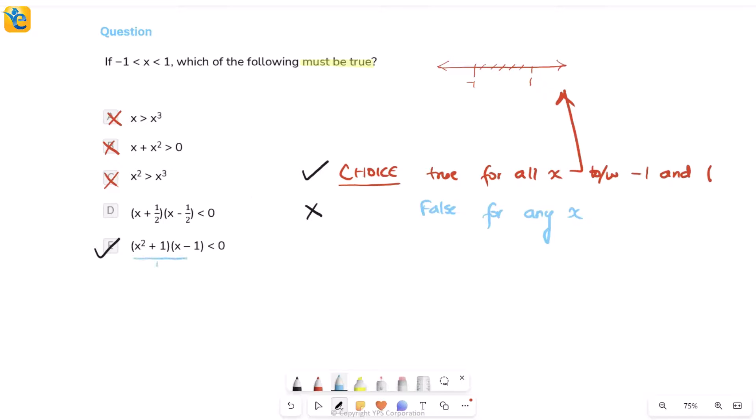Here, if you try to factor this, the x squared plus one cannot be factored further. In fact, x squared plus one is something which is always positive. X squared being non-negative and then you're adding one to it. So if it's a product of two numbers which is negative, and one of them I know is positive, then that guarantees x minus one is less than zero, which means from here you get that x is less than one.